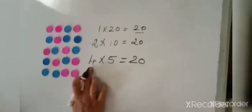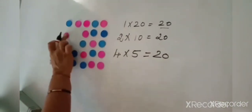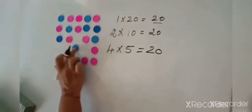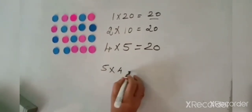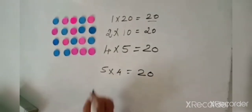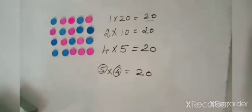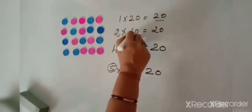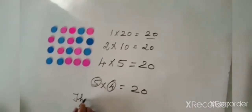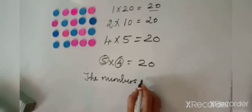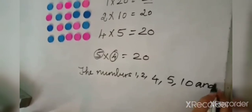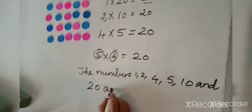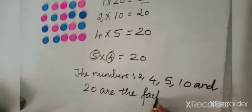So let us take all the possible combinations. Now if we take 5 coins in each row, we get 4 rows. Here the numbers 5 and 4 are repeated, so we have found all the numbers which completely divide 20 — all the factors of 20. We can say that the numbers 1, 2, 4, 5, 10, and 20 are the factors of 20.